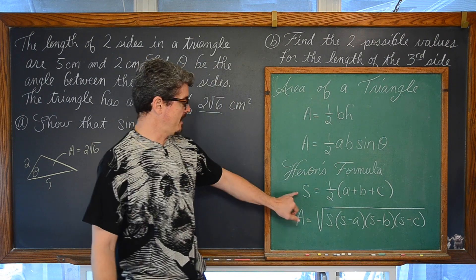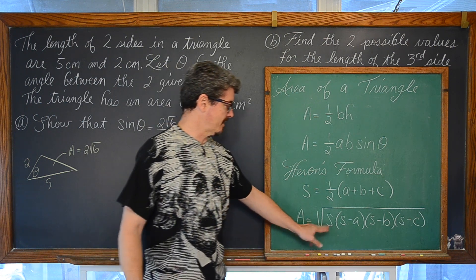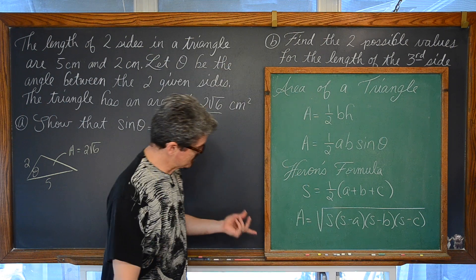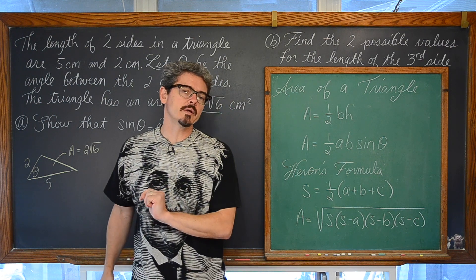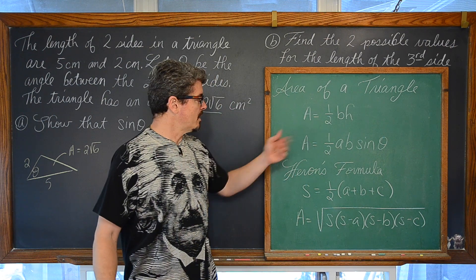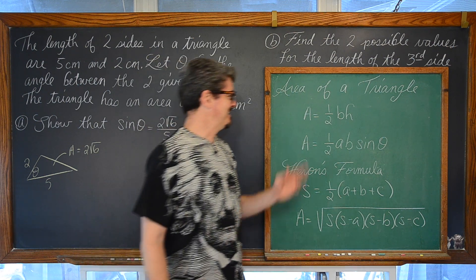And then we have Heron's formula where we find S which is half the perimeter and then work through the area is equal to the square root of S times S minus A times S minus B times S minus C. Three choices. Which one is going to be helpful? Which one works with angles and sine functions? It is the second one.